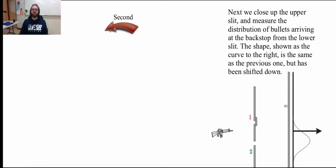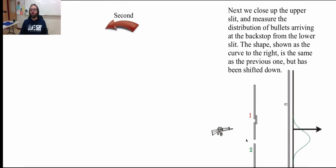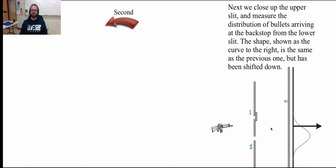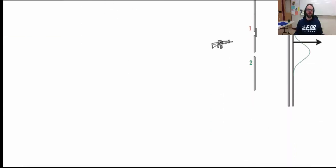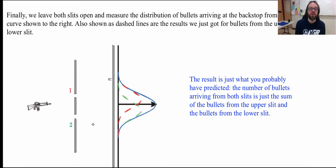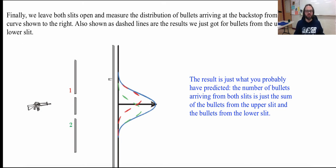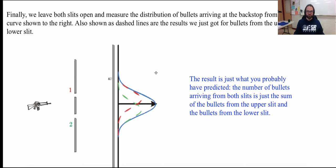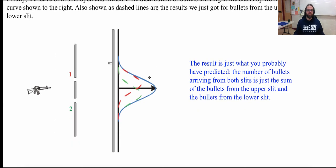Then we open the second slit and get a bell curve over there as well. Now, based on superposition, when we have both slits open with the gunner shooting randomly, we add those two original bell curves together and end up getting superposition — a nice bell curve where most of the bullets land in the middle and few go out to the sides.